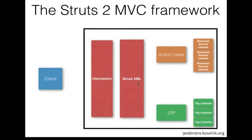One is the struts.xml and the interceptors. We have action classes and we have JSPs that use tag libraries, and of course action classes call certain business service methods to do the actual work. This is an overall high-level picture of a Struts2 MVC web application, but since we're developing a small bare-bones Struts2 application in this tutorial, we're going to stick to the essentials. We'll remove some of these elements initially and add them later.